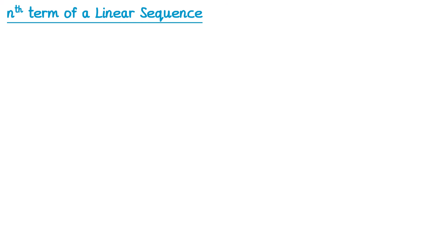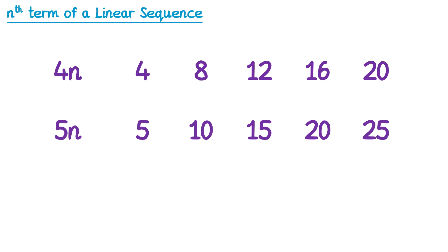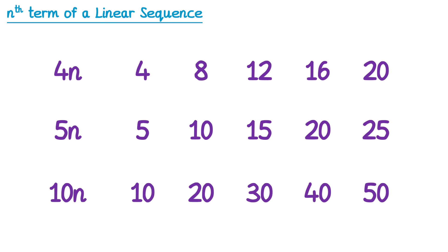When we generated the sequence 4n, we noticed it was the multiples of 4, or the 4 times table. When we did 5n, it was the multiples of 5, or the 5 times table. And this works for any number, so 10n would be the multiples of 10, or the 10 times table.